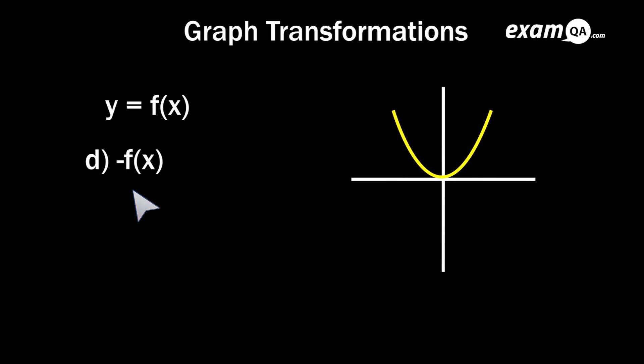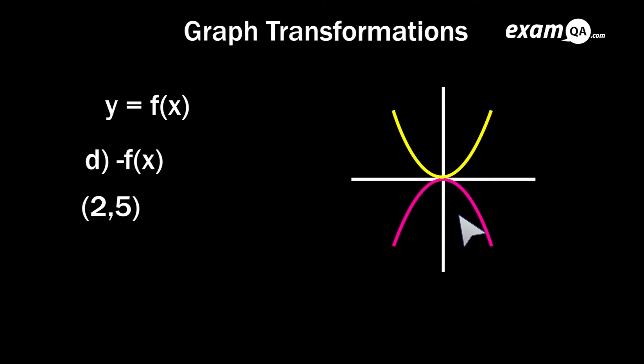Let's look at the transformation negative f(x). This one is a reflection, and it's a reflection in the x-axis. So the x-axis is going to be your mirror. Looking at the graph first: the graph simply reflects over the x-axis. For a coordinate, the x value stays the same but the y value becomes negative.